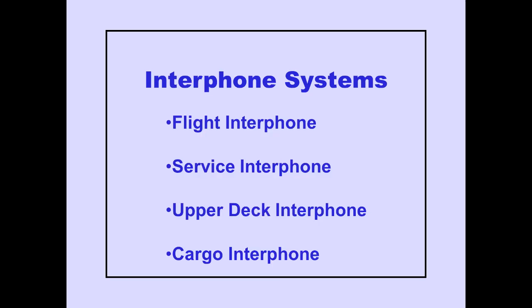Now let's discuss the interphone systems. The interphone systems on the 747-400 are the flight interphone, service interphone, upper deck, and the cargo interphone. Let's begin with the flight interphone.